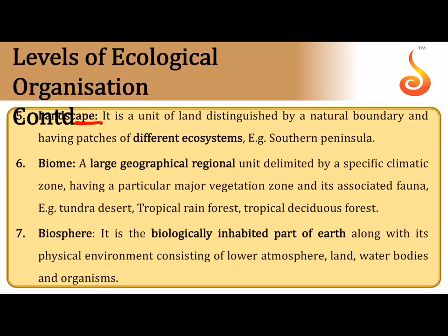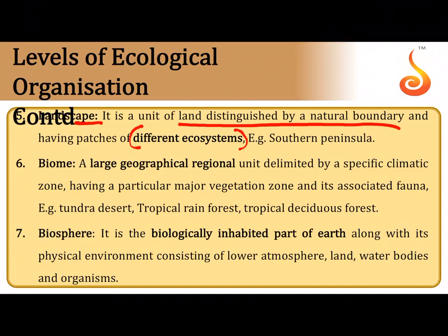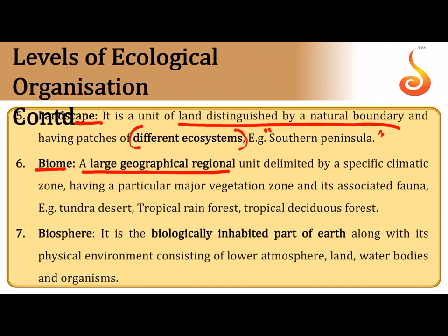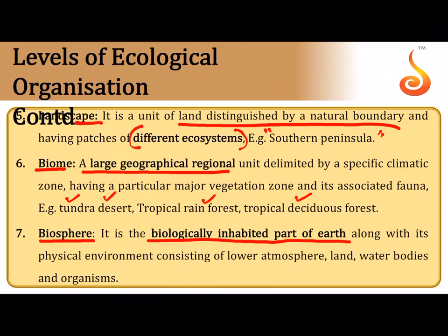A landscape is a unit of land distinguished by its natural boundaries — a collection of different ecosystems. If groups of ecosystems stretch over very large geographical areas, they are referred to as biomes, for example tundra, desert, tropical rainforest, tropical deciduous forest, and grassland. The highest level in ecological organization is the biosphere — the biologically inhabited part of Earth, a thin film of life little below and above the soil and atmosphere.